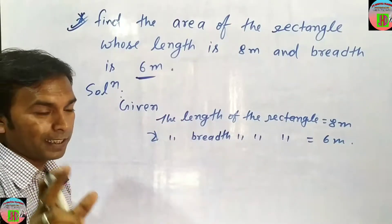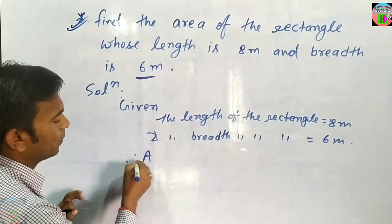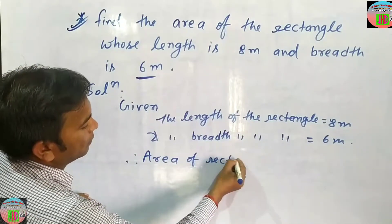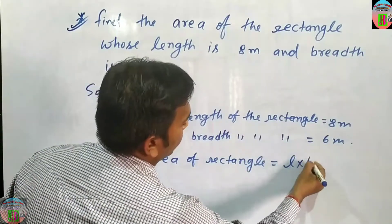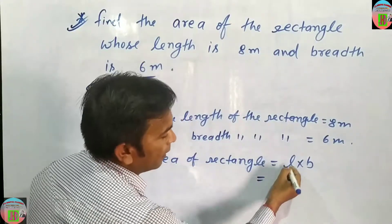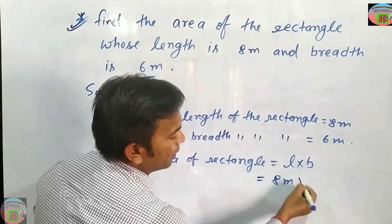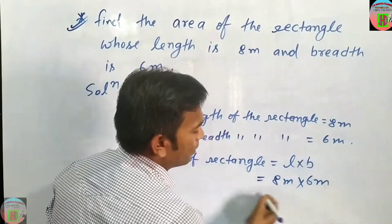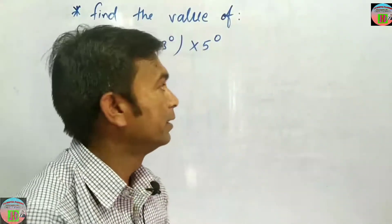Remember, what is the area of rectangle? Therefore, area of rectangle is equal to L into B, that is length into breadth. Here, L that is length is given 8 meter, then 8 meter into breadth is given 6 meter. Write here 6 meter. 8 into 6.